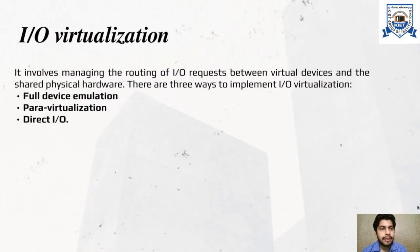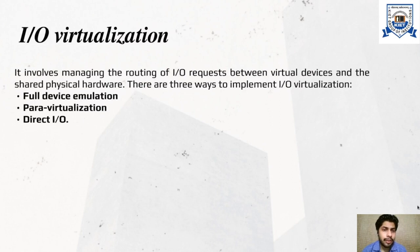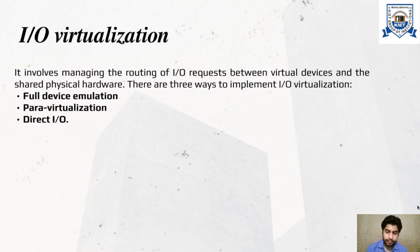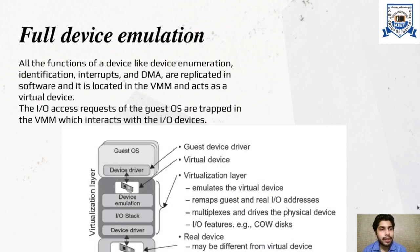Now let's talk about IO devices. IO virtualization involves managing the routing of IO requests between virtual devices and the shared physical hardware. There are three ways to implement IO devices: full device emulation, para virtualization, and direct IO. In full device emulation, all the functions of a device — such as device enumeration, identification, interrupts, and DMA — are replicated in software located in the VMM, which acts as a virtual device. The IO access requests of a guest OS are trapped in the VMM, which interacts with the IO devices.